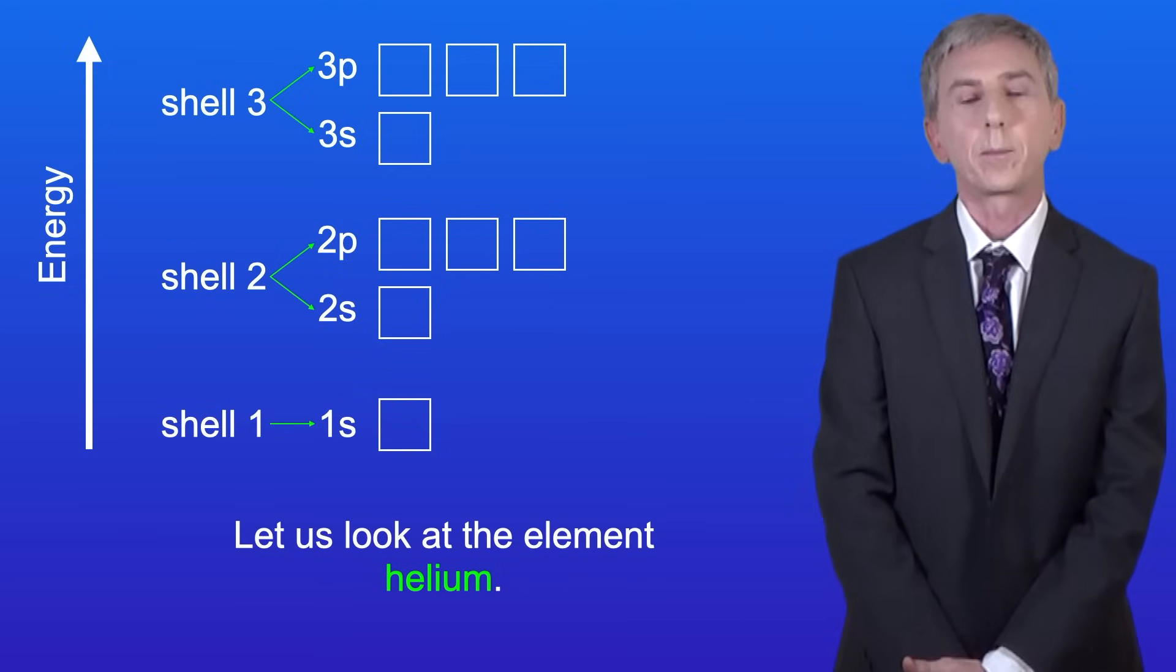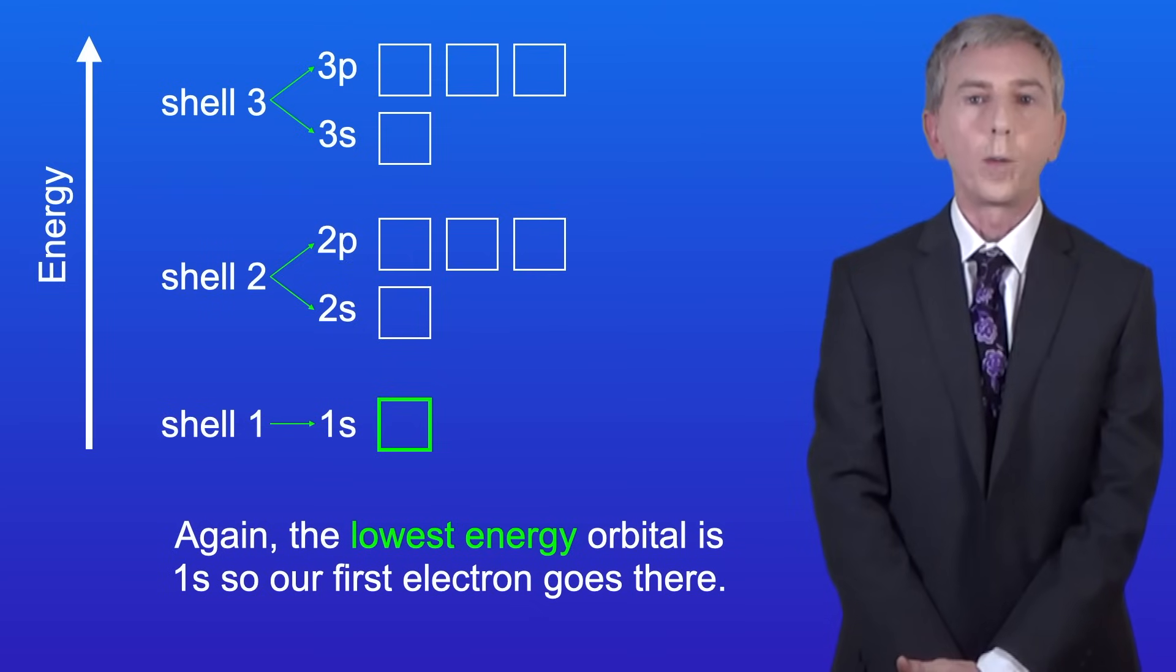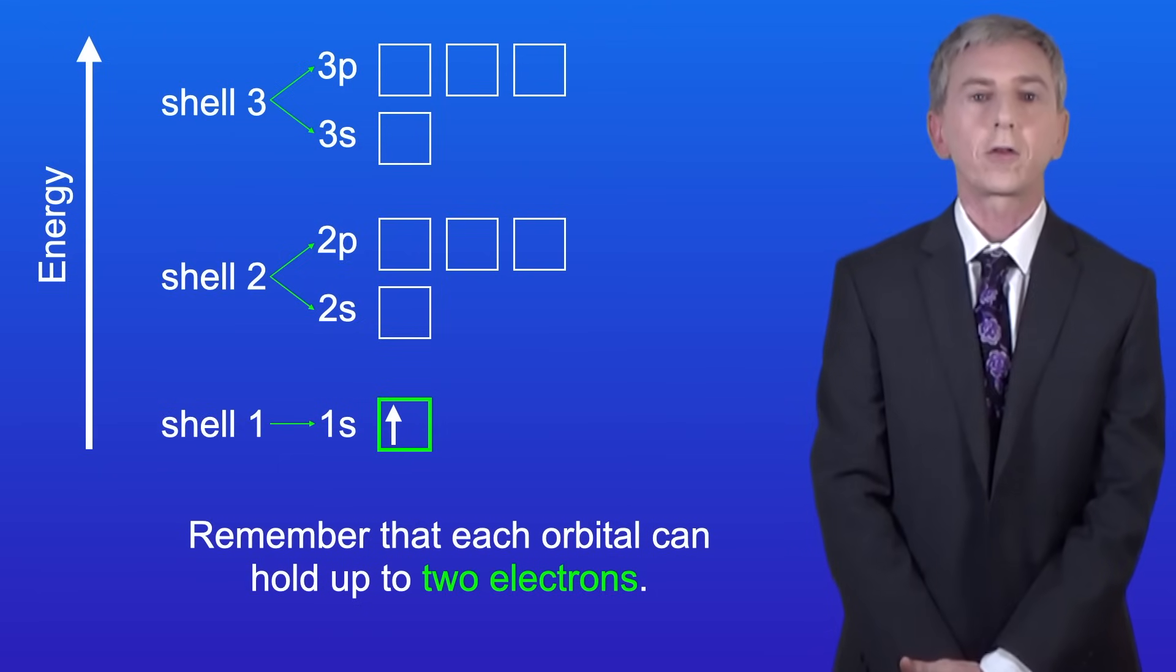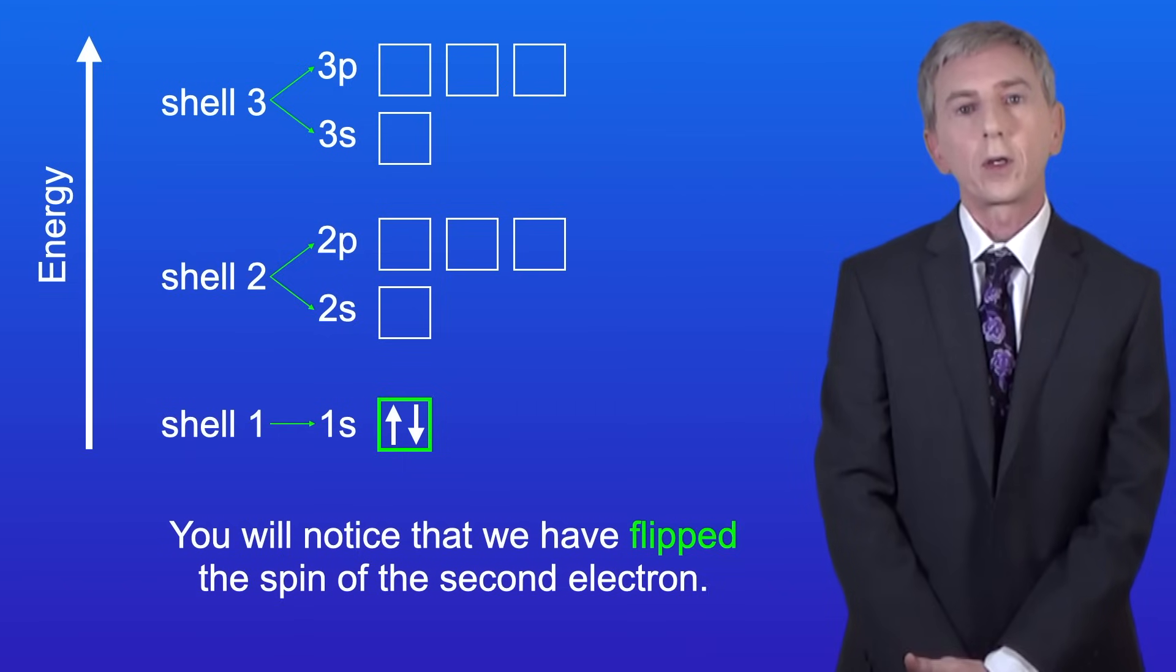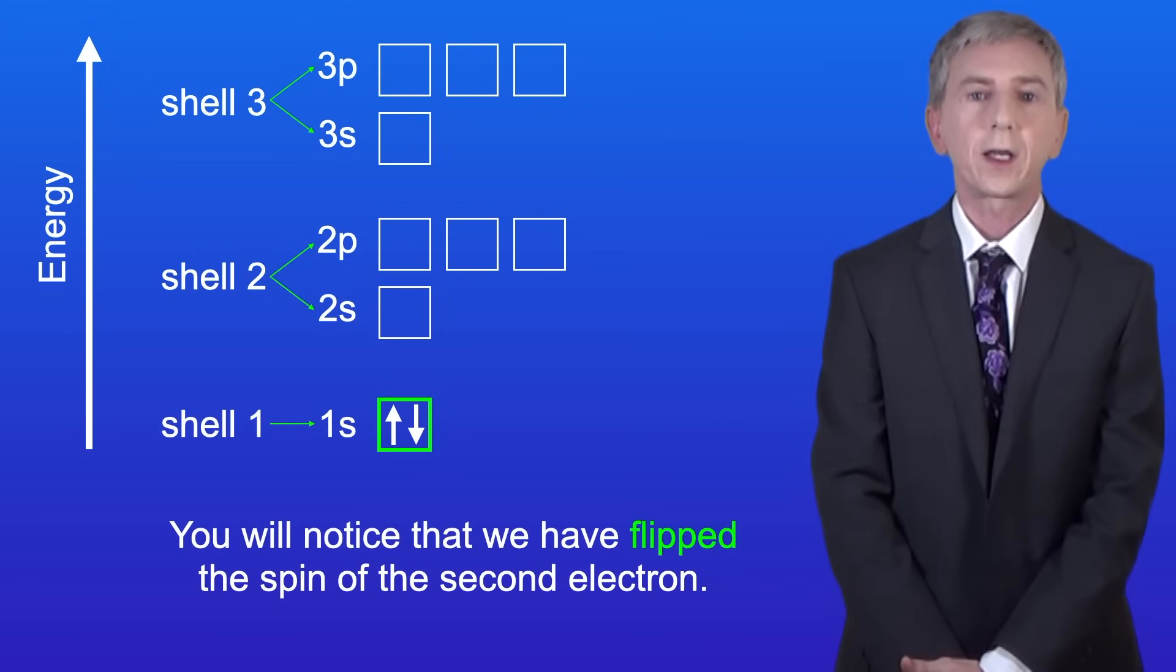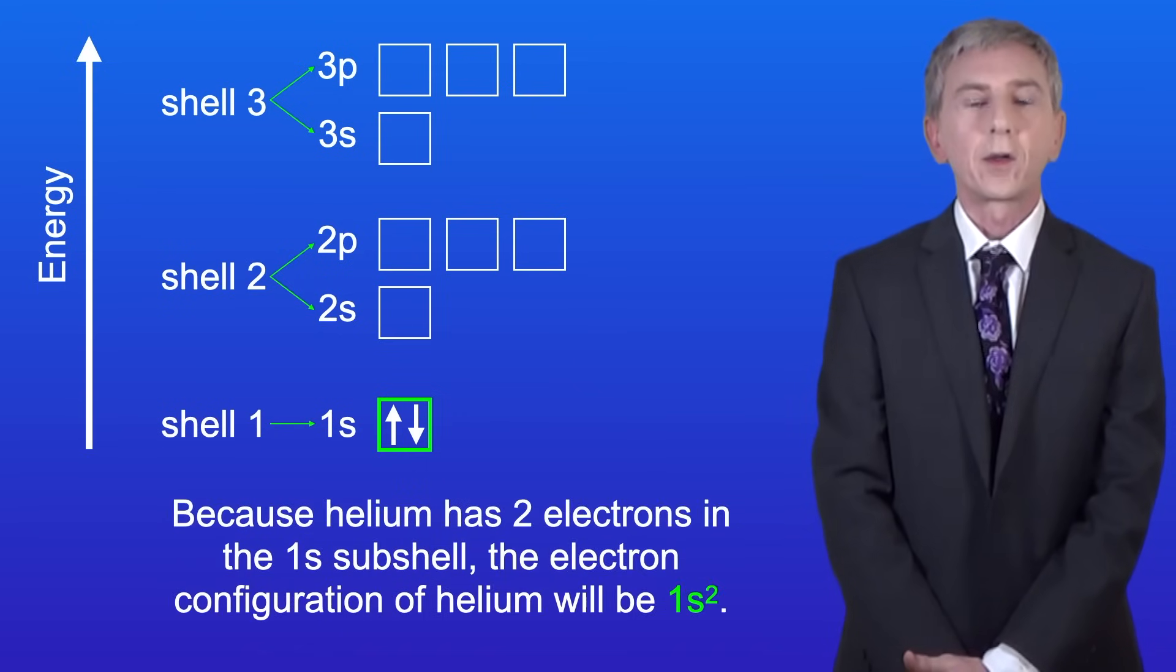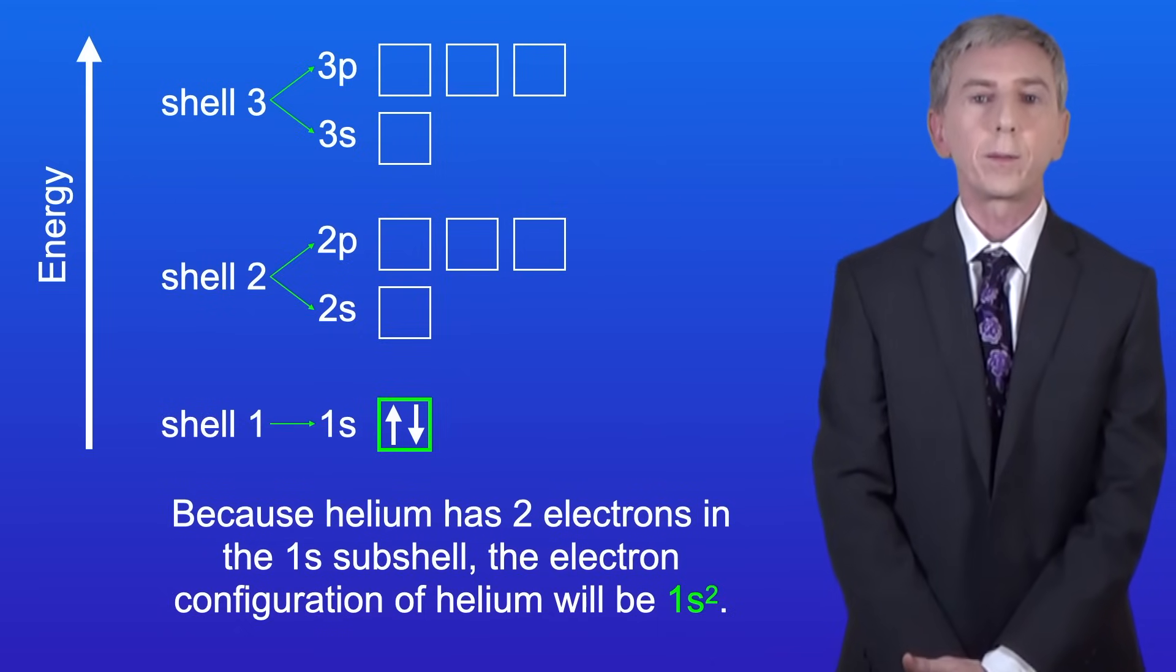Let's look at the element helium. Helium has two electrons. Again, the lowest energy orbital is 1s, so our first electron goes there. Remember that each orbital can hold up to two electrons, so that means that our second electron can also go into the 1s orbital. Now, you'll notice that we've flipped the spin of the second electron, and that's because electrons in the same orbital must have opposite spins. Because helium has two electrons in the 1s subshell, the electron configuration of helium will be 1s2.